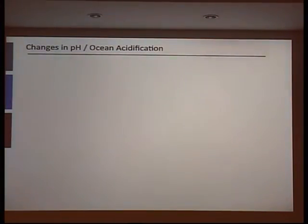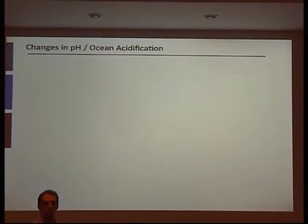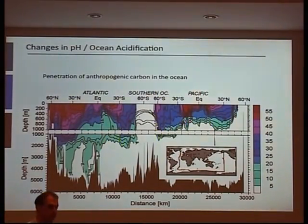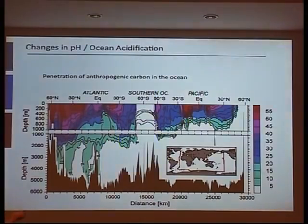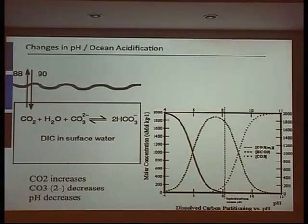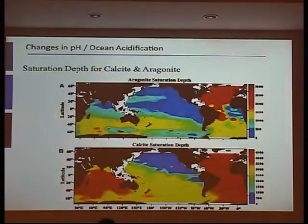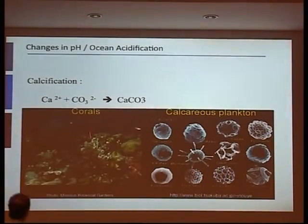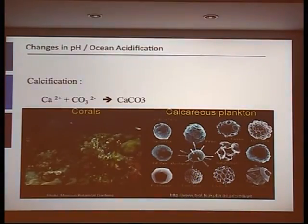A few words now on ocean acidification and changes in pH. The ocean is absorbing anthropogenic carbon — mostly in the North Atlantic but also in the Southern Ocean and Pacific. This changes ocean chemistry: more CO2 in the water means more bicarbonate ion but less carbonate ion. It's the decrease in carbonate ion that will impact calcification, since calcifying organisms use calcium ions and carbonate ions to form calcite or aragonite.